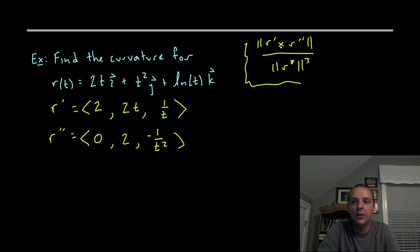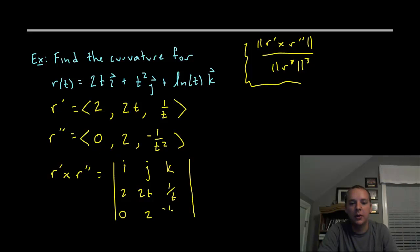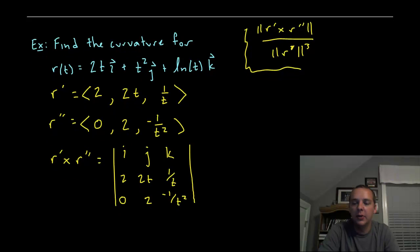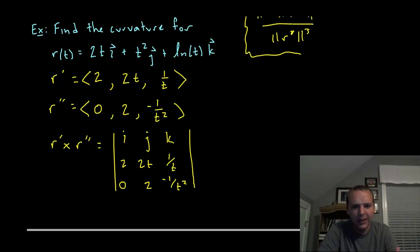I'm going to try to take their cross products now. So r prime cross r double prime. You'll recall for this you set up a 3 by 3 matrix where the top row is i, j, k, and then you enter the components of r prime on the second row: 2, 2t, 1 over t. And then r double prime on the third row is 0, 2, negative 1 over t squared. If we can take the determinant of this 3 by 3 matrix, it will be the cross product, which is a vector orthogonal to both r prime and r double prime.